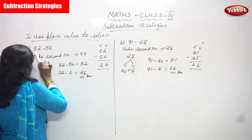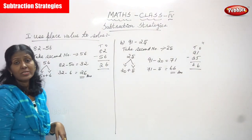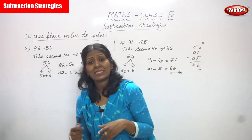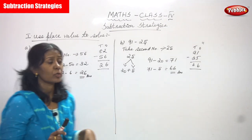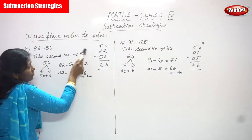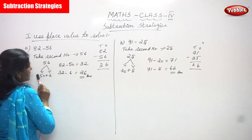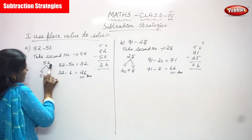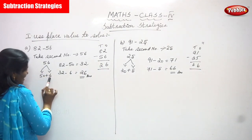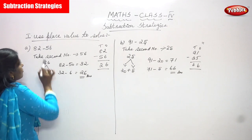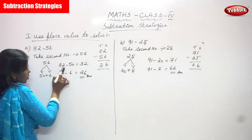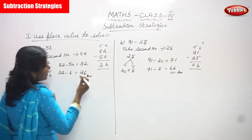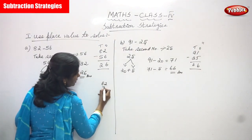The first number is 82 and the second number is 56. We are going to take the second number, 56, and split it: 50 plus 6. This is the 1's and this is the 10's. Now we take the first number, 82, and subtract the 10's: 82 minus 50.